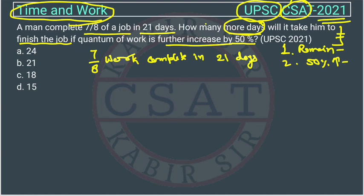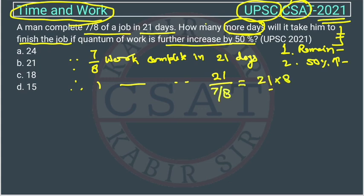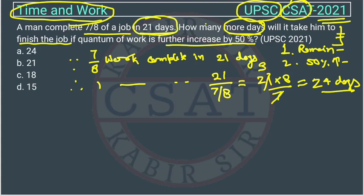We can solve it through the unitary method. If 7/8 work completes in 21 days, then one full work will complete in 21 divided by (7/8), which equals 21 × (8/7). Simplifying: 8 × 3 equals 24. So the full work gets completed in 24 days.